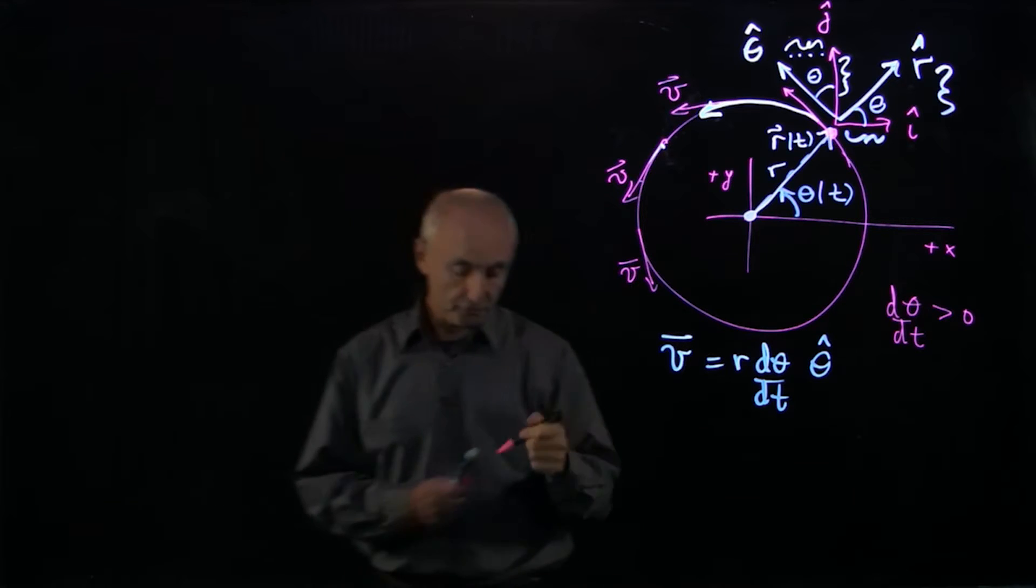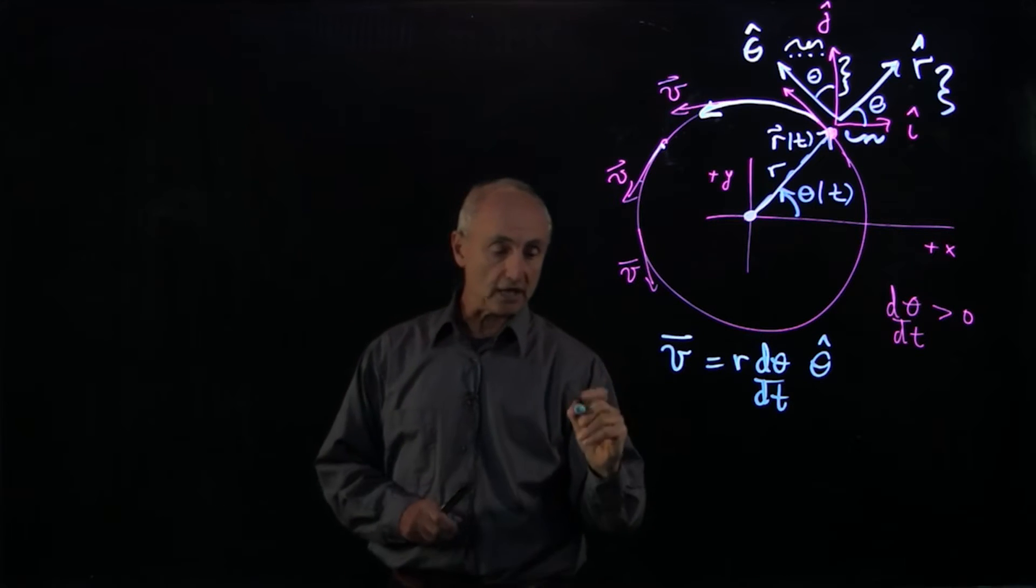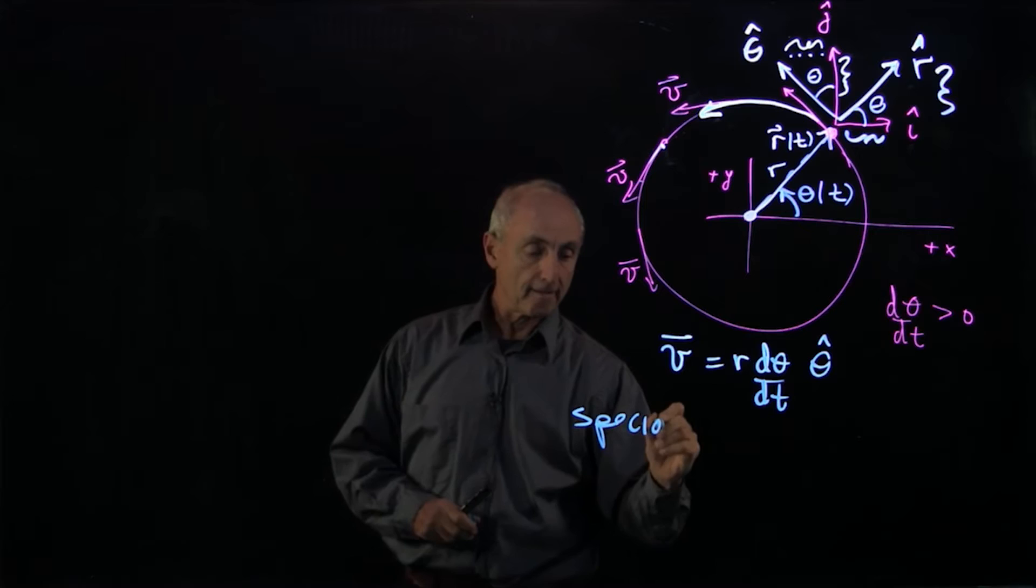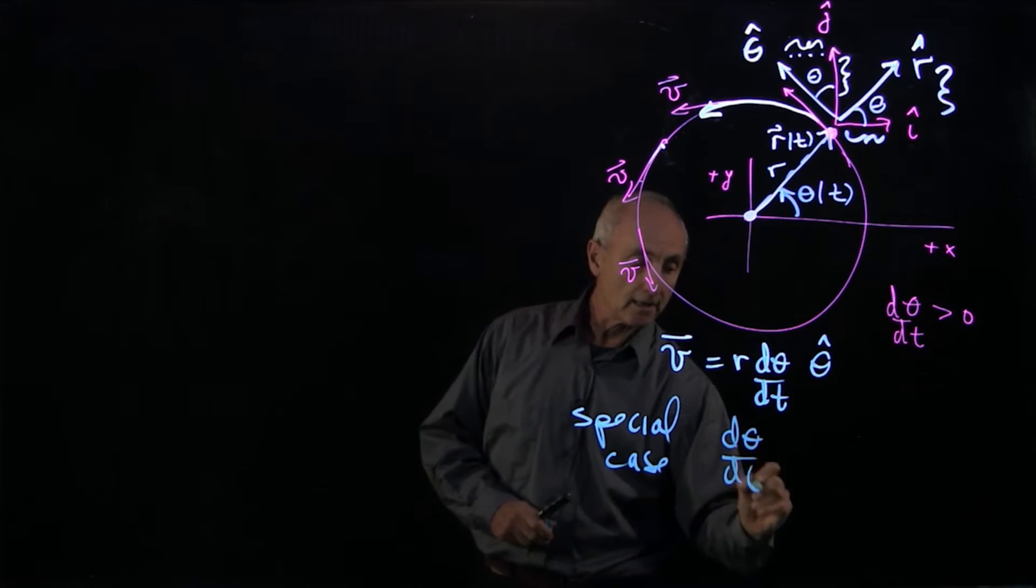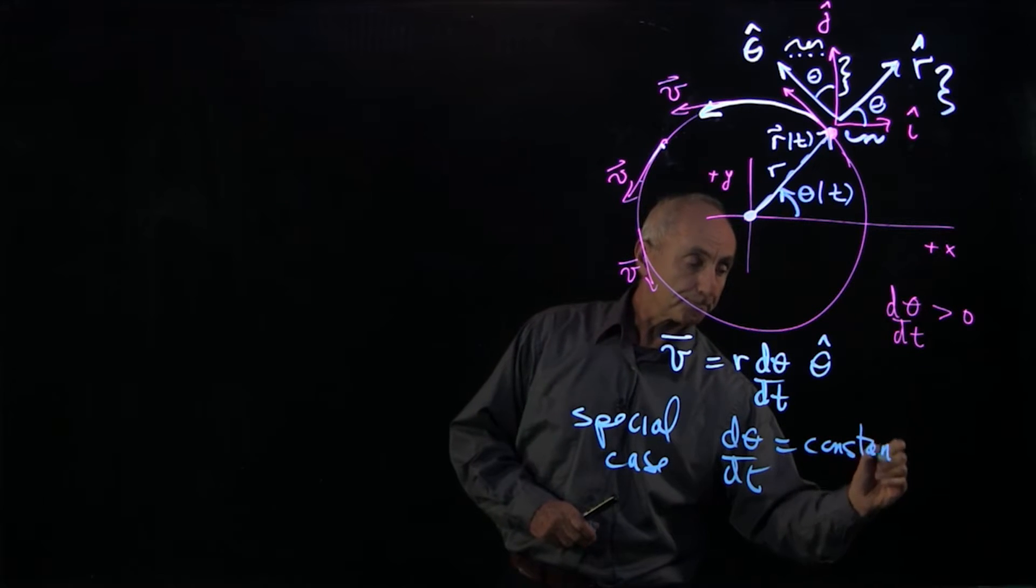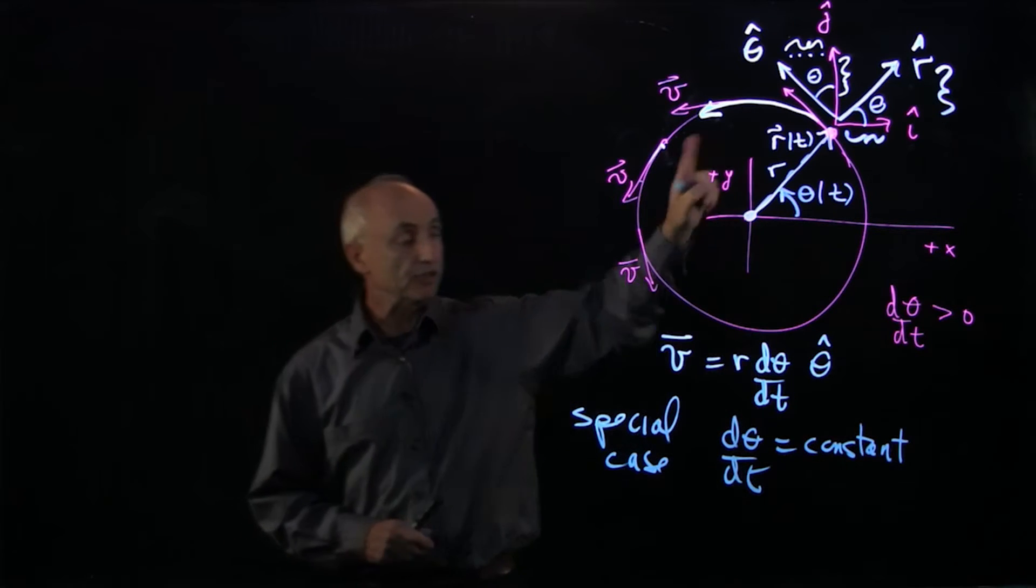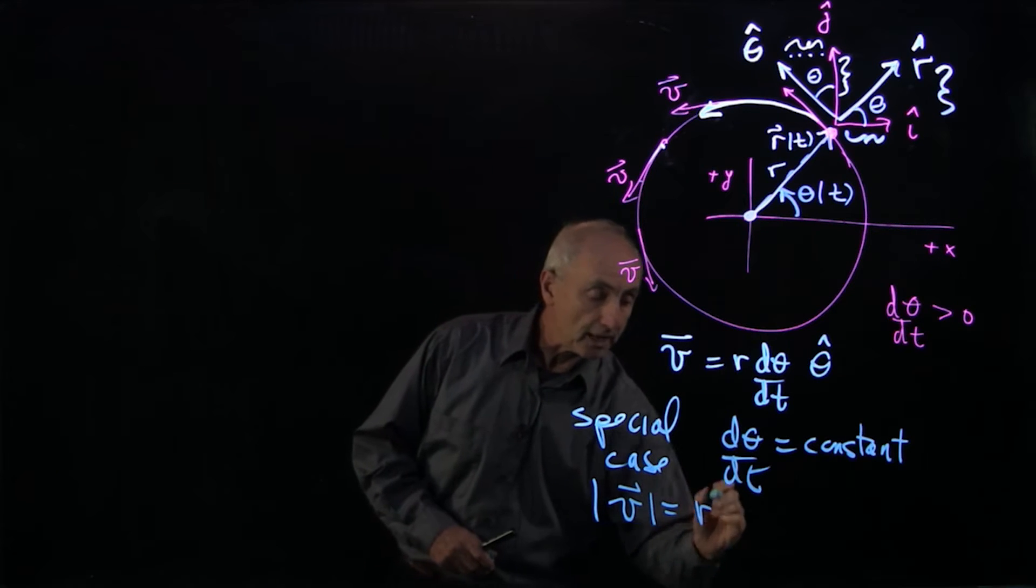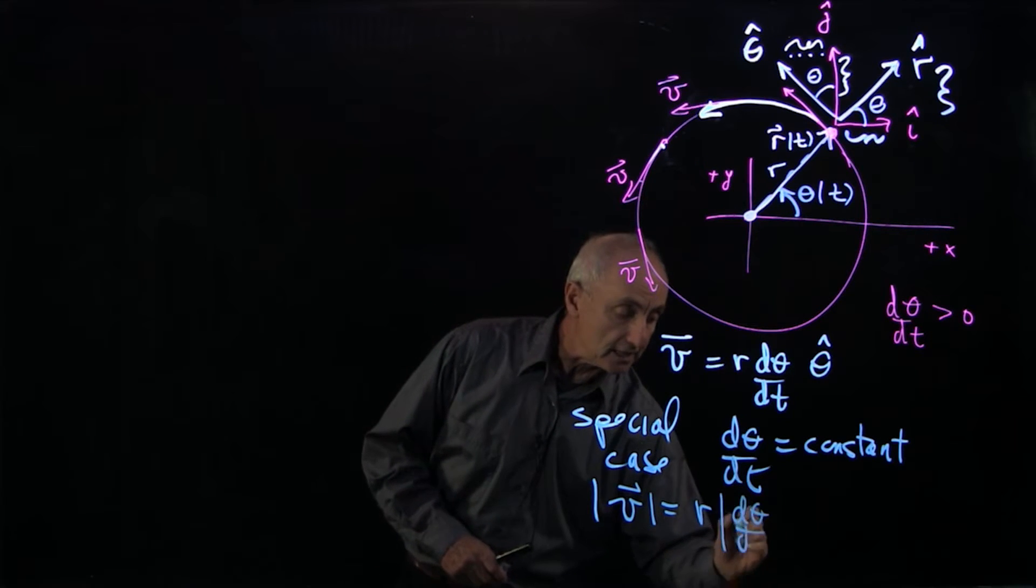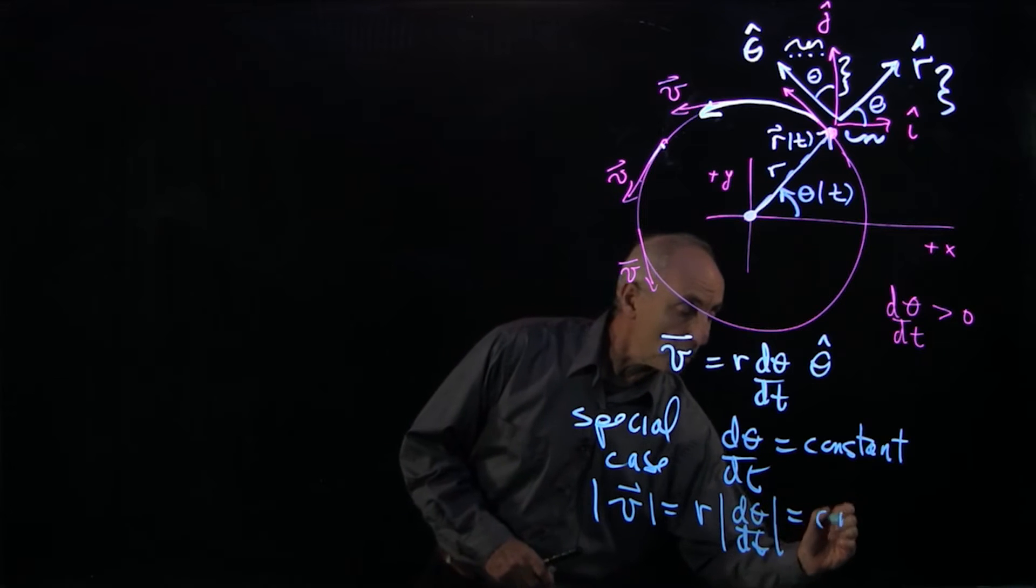Notice that if we consider the special case in which d theta dt is a constant, in that instance, the magnitude of the velocity v is given by r magnitude of d theta dt, and that is also a constant.